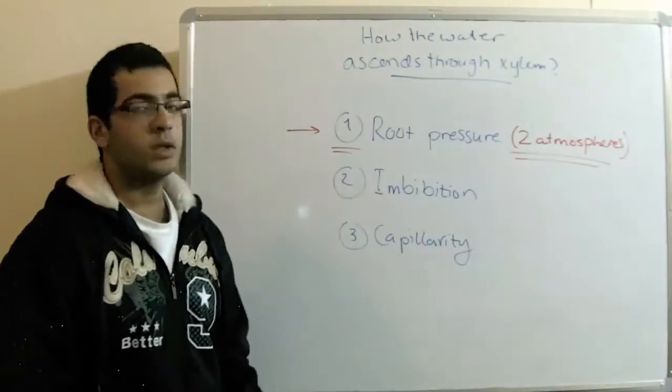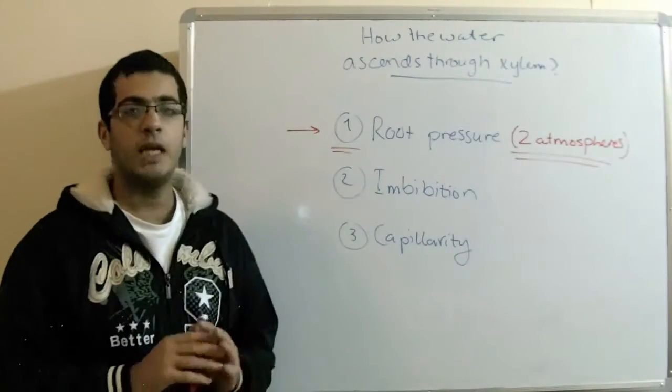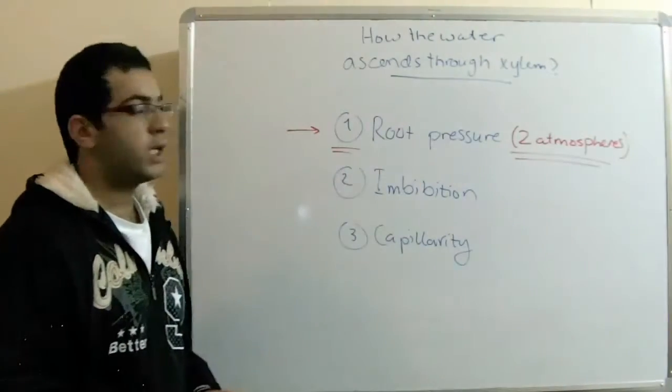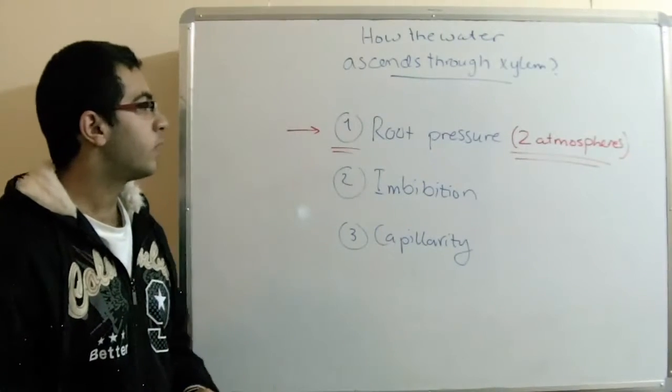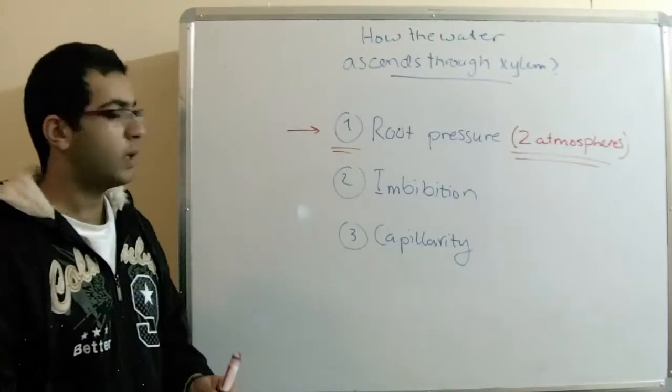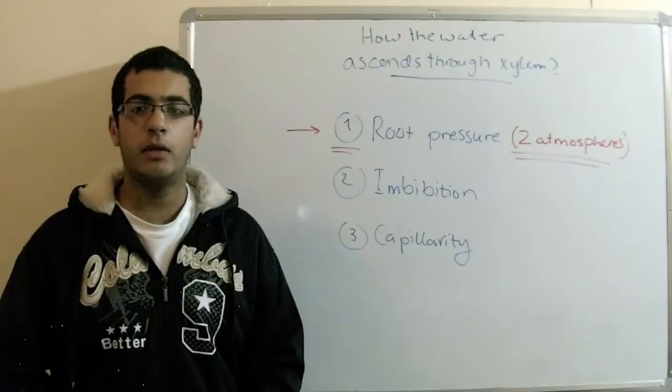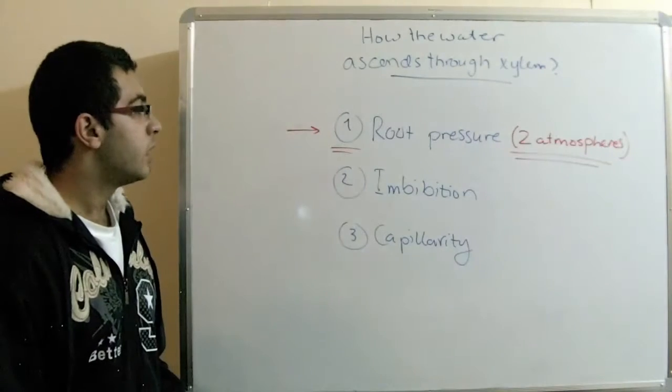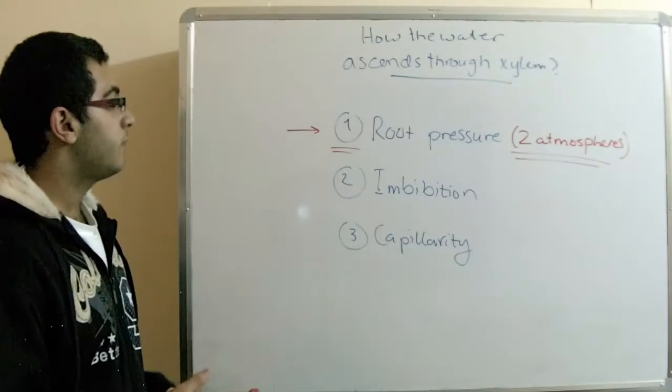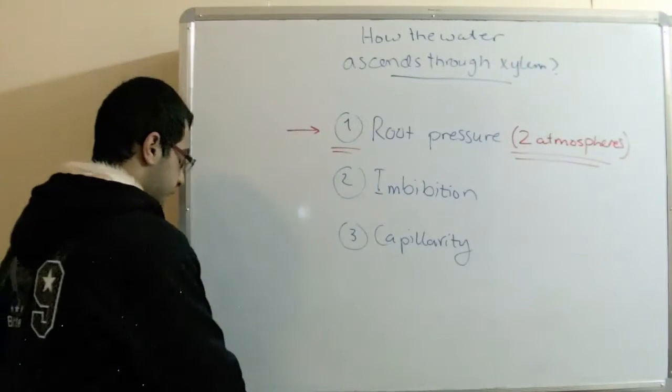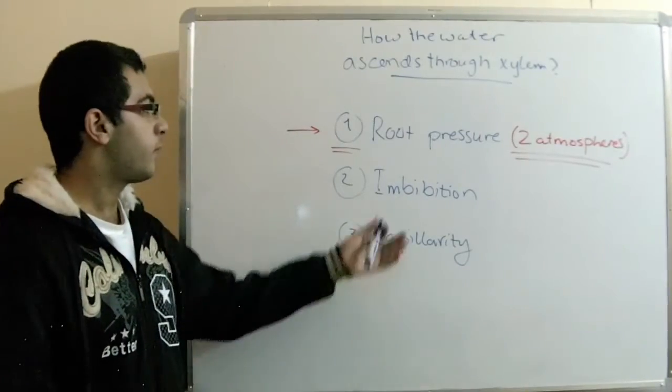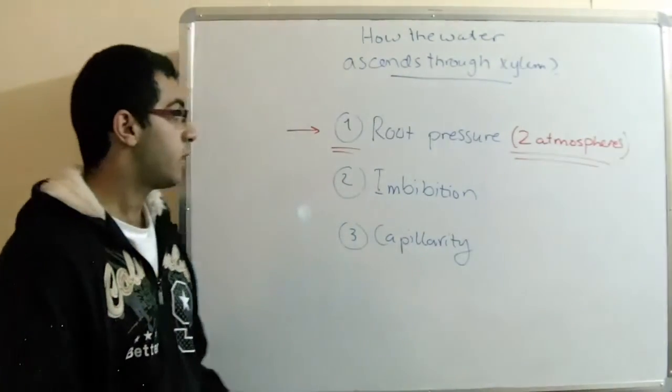And the root pressure has another name, which is called exudation. So this process of exudation is insufficient for the water to ascend through the xylem vessels, because in some trees they are 100m or 150m high. So it is insufficient, because it is easily affected by environmental phenomenon. And also there are some plants which are free from the root pressure, such as the conifers and pines and so on.